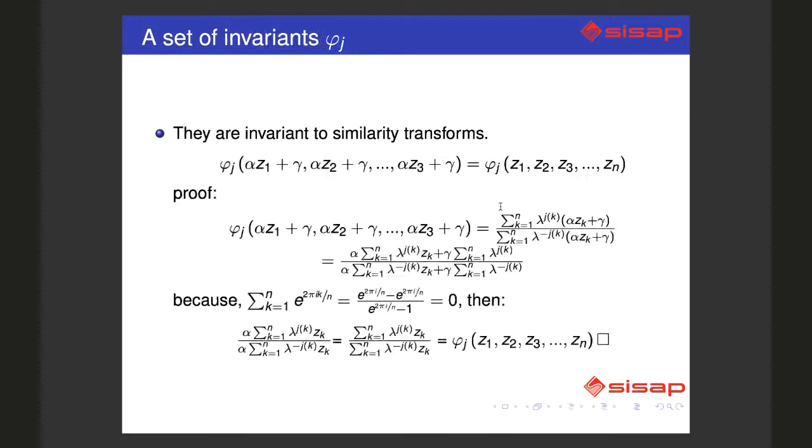We will compute the Fourier transform of this ordered set of complex numbers and take the two transforms - the direct and inverse Fourier transforms - and the quotient will be the invariant. Why is it invariant?